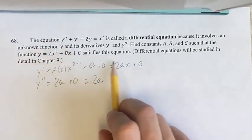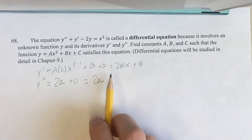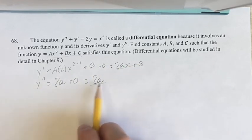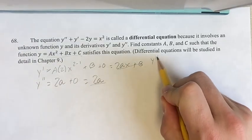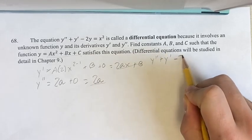So now we can plug in our equation for y, y prime, and y double prime into this equation, and we'll be able to solve for a, b, and c. So writing it out right here, just rewriting what we have given...